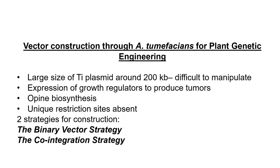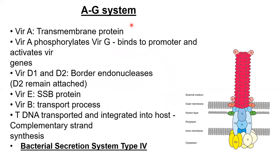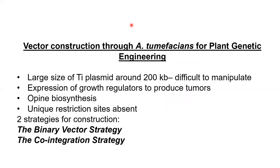There is a gene for auxin and a gene for cytokinin, and these phytohormones can produce tumors and will be very difficult to control. The third problem is opine synthesis — we do not want these genes present. Another problem is the absence of unique restriction sites; without a multiple cloning site it will be very difficult to use molecular biotechnology techniques.